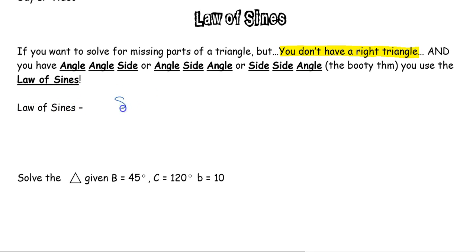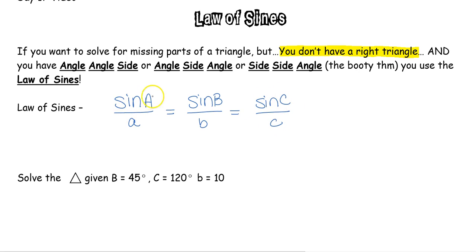The Law of Sines is all about proportions. The formula is: sine of angle A over side a equals sine of angle B over side b equals sine of angle C over side c. Notice the pattern — the sine of the angle goes on top and the corresponding side goes on the bottom. You just follow that pattern every single time.